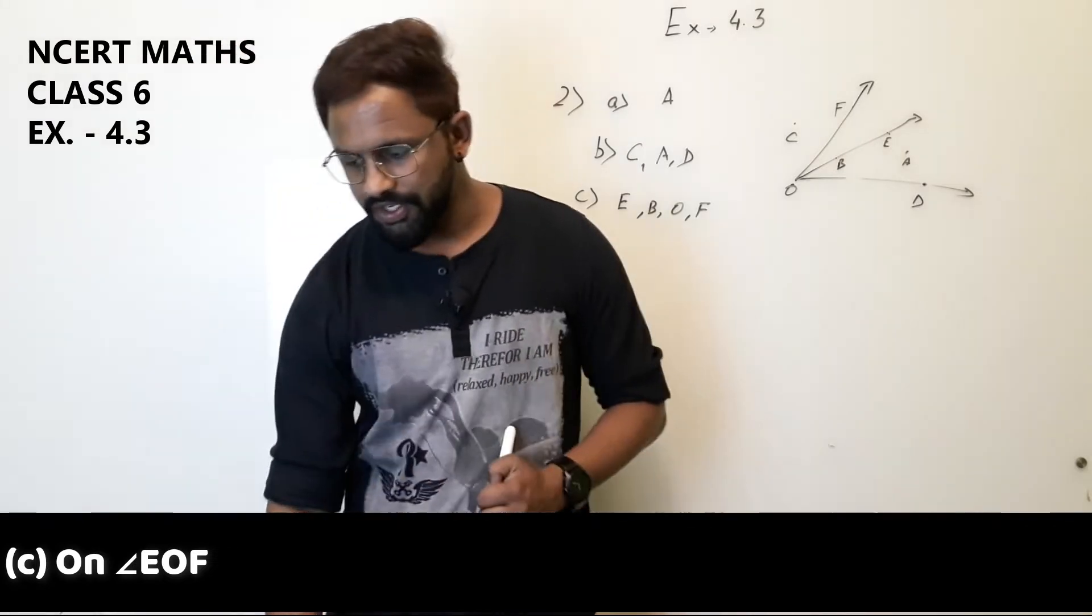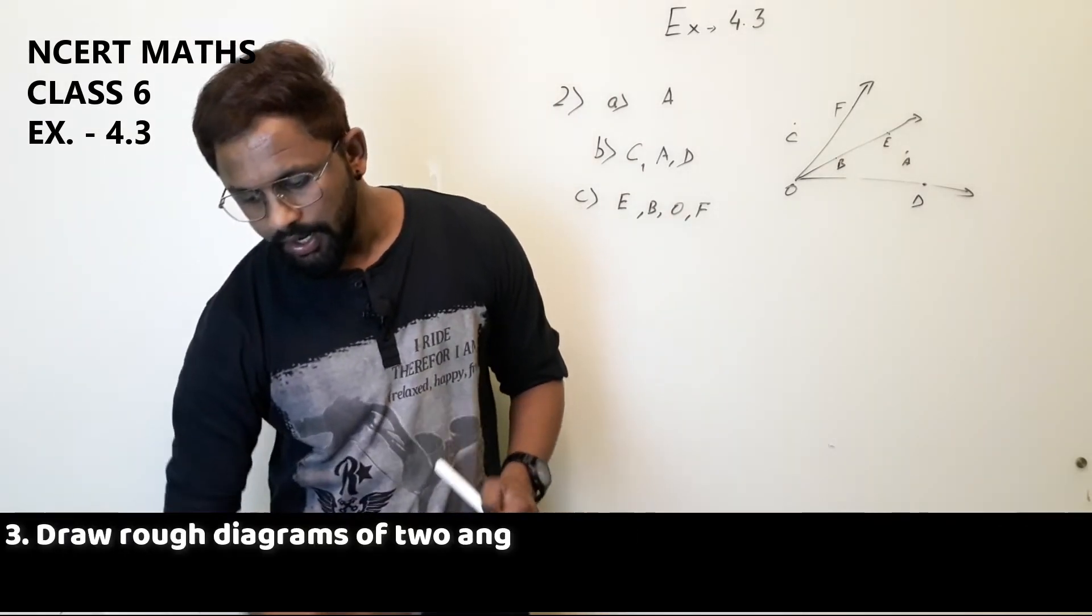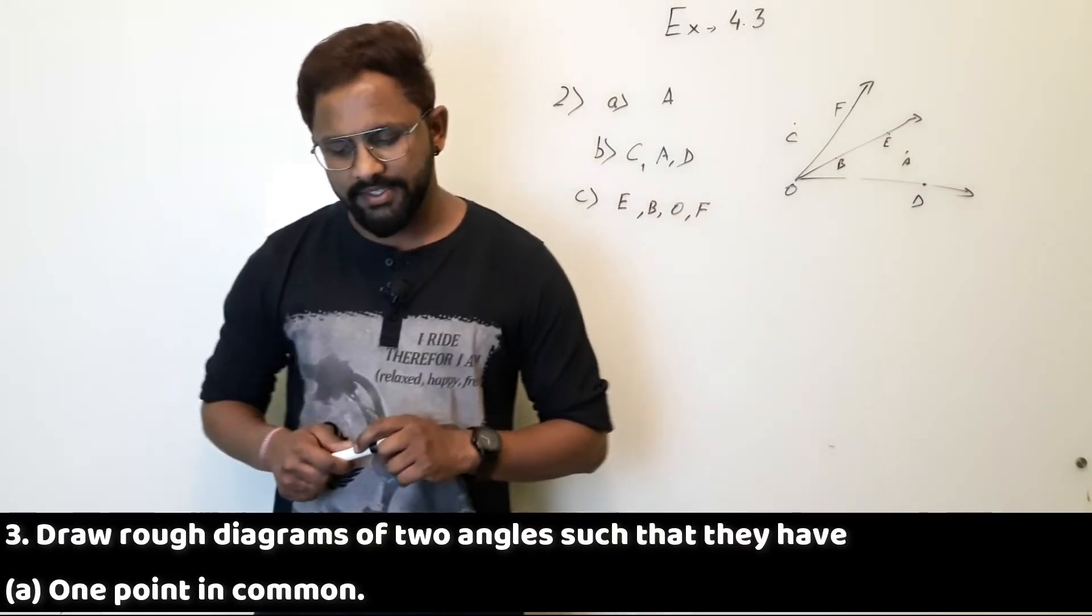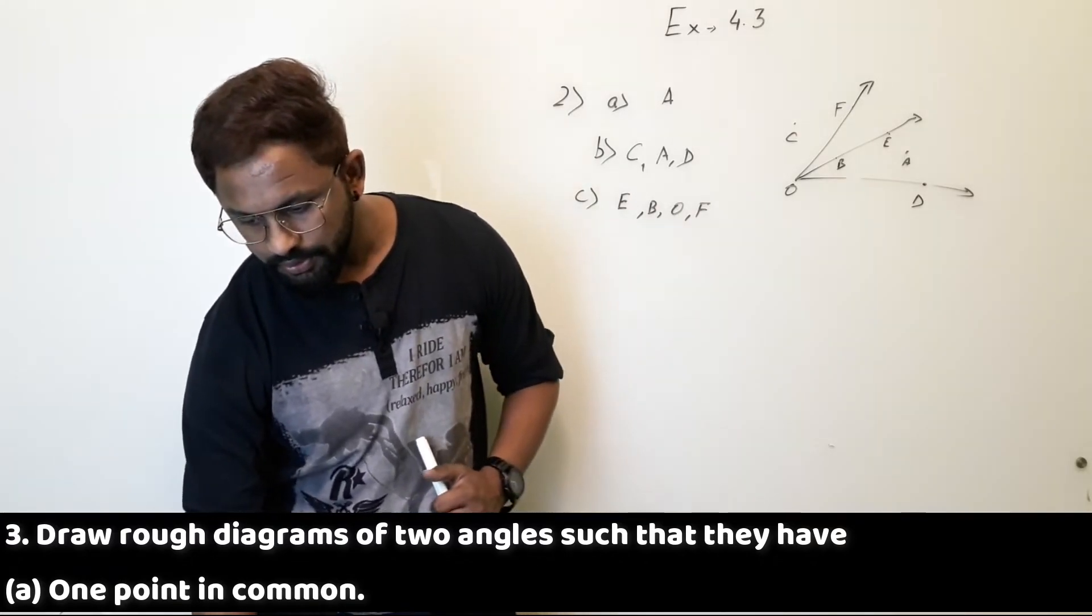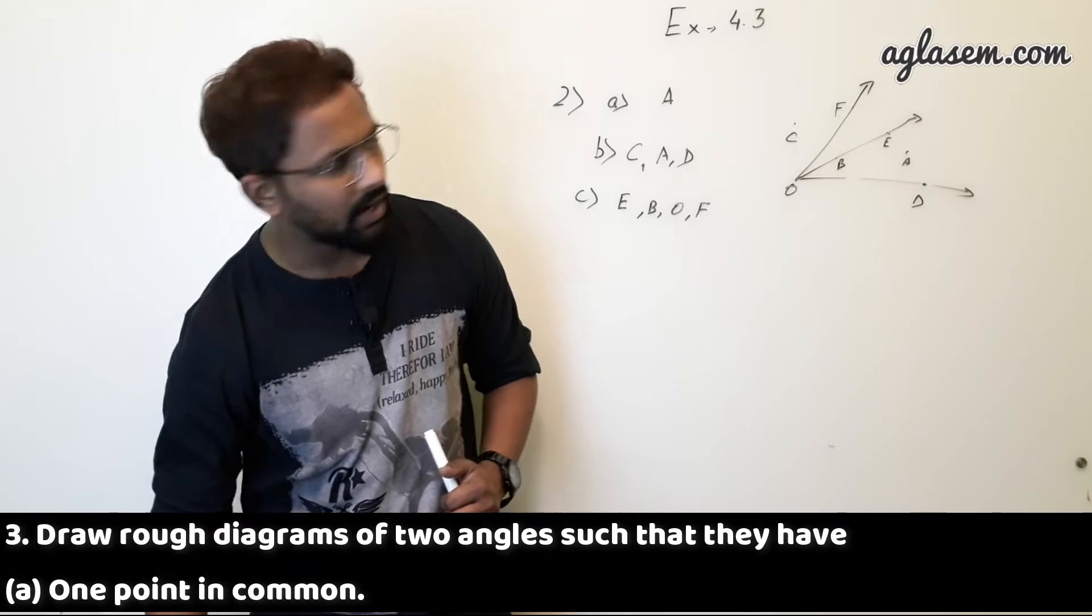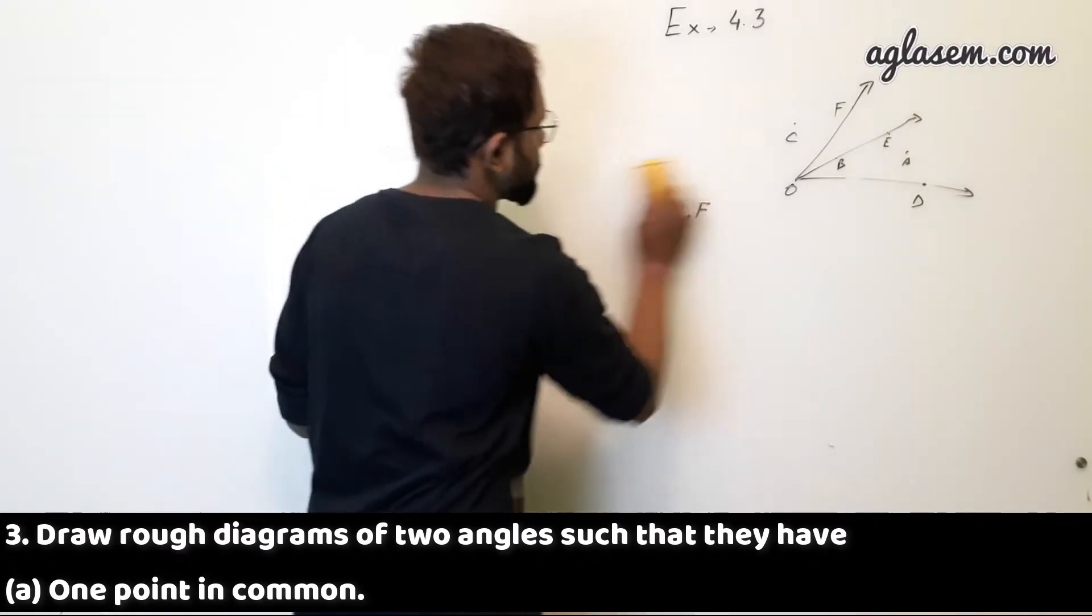Question number third, draw rough diagrams of two angles such that they have, there are five parts so you have to draw like according to that. So I will be doing this on the board.